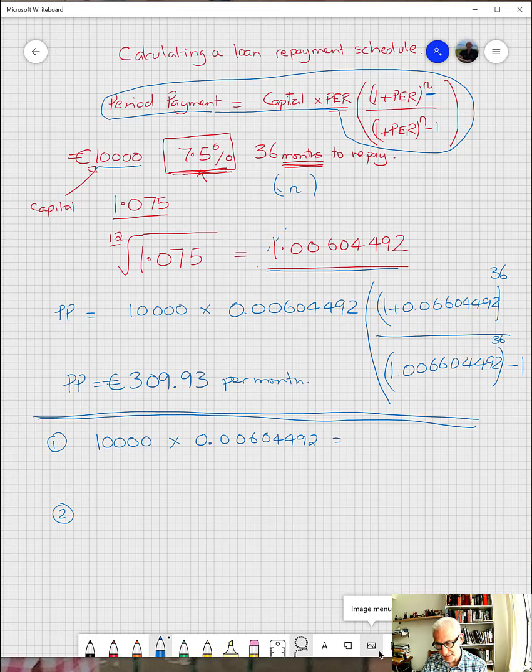Which is 60.4492 euros. Now that money is added on to what you owe before, then we subtract whatever your monthly payment is going to be. So what you've got now is ten thousand and sixty two point four four nine two, from which you subtract the repayment that you're making.